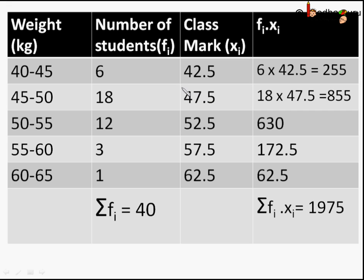Same way, x₂ equals class mark of second class, which will be equal to 45 plus 50 by 2, which is equal to 47.5.